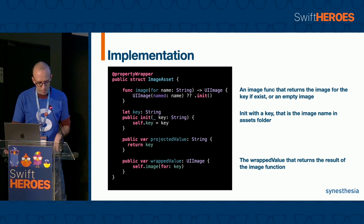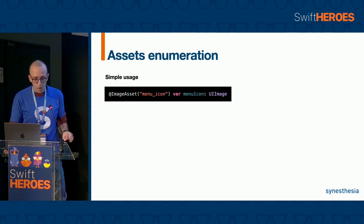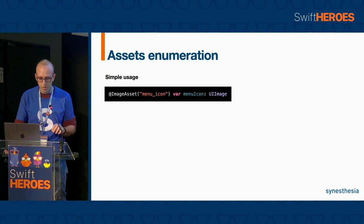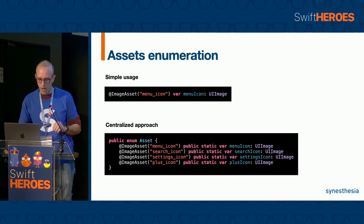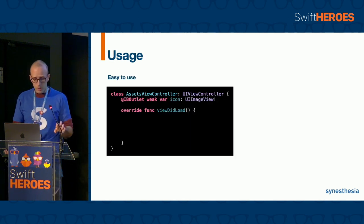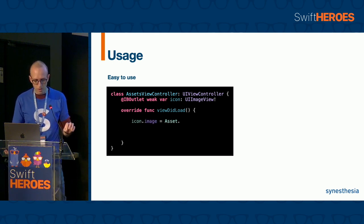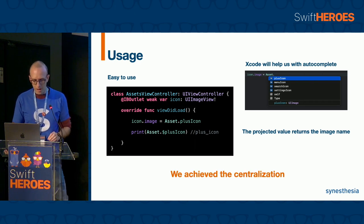We can also add a projected value. As mentioned before, the projected value can return whatever you want — in this case we decided to return the key. We can implement a UIImage property annotated with the @ImageAsset attribute. But in order to centralize the image asset management, we can create an enum. The Asset enumeration contains the list of all our icons. With this approach, assigning an image to an image view becomes very easy — we only write Asset dot and Xcode will help us with autocomplete. It is also possible to access the projected value that returns the image name. In this way, we have centralized all the icons and images in a single enumeration.